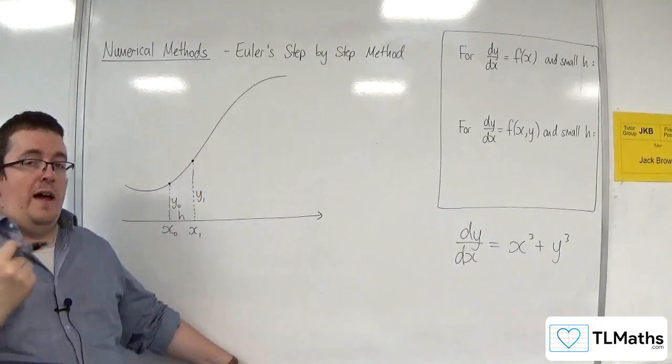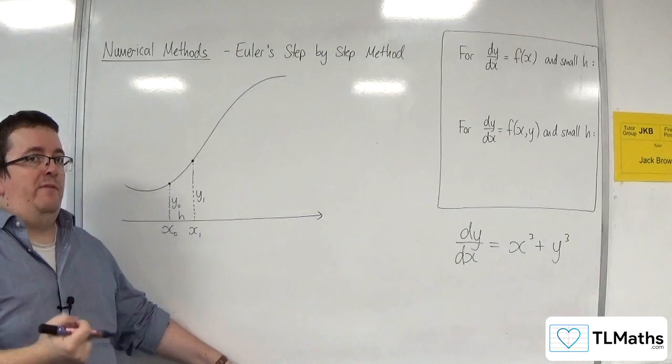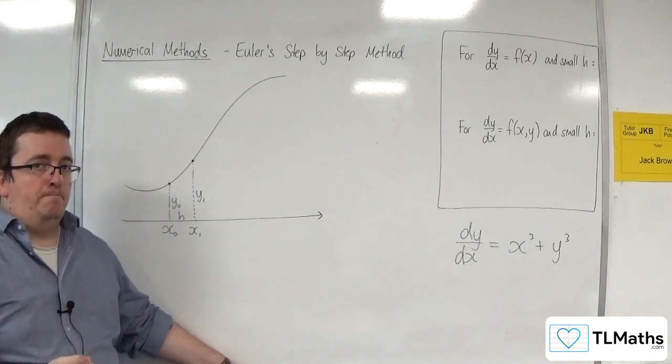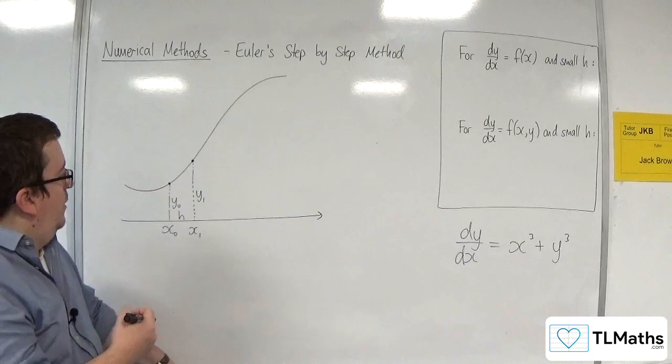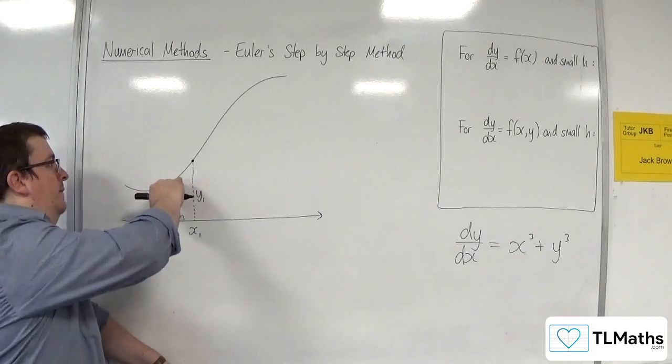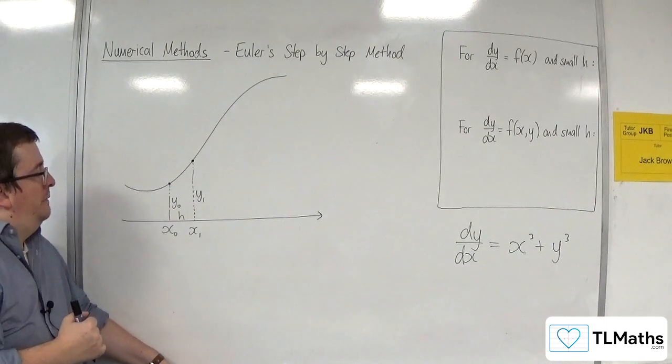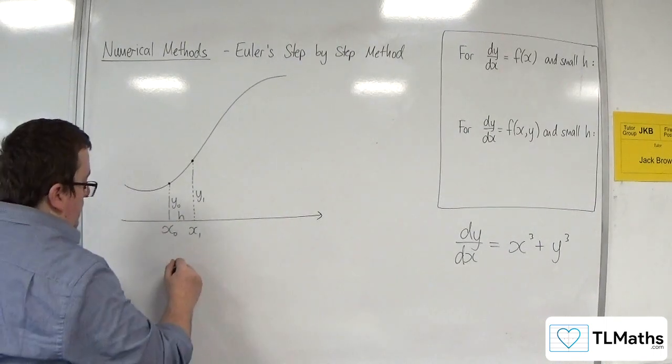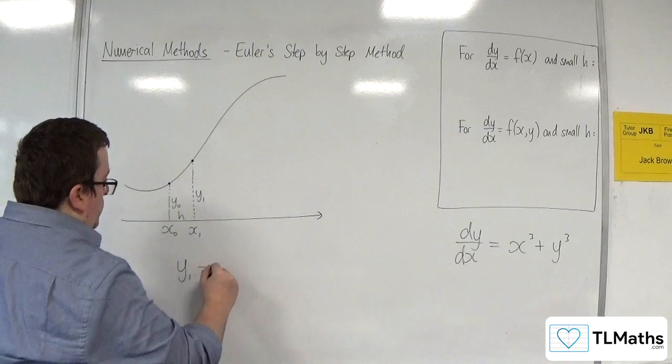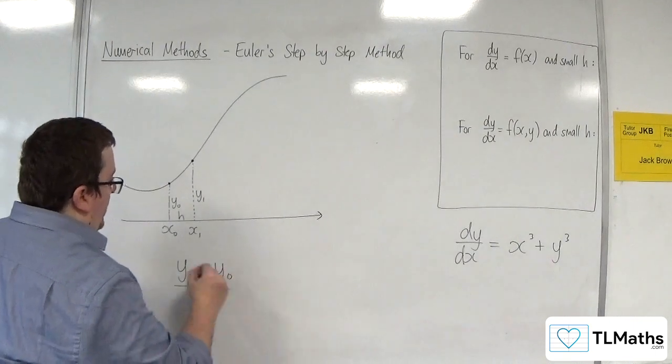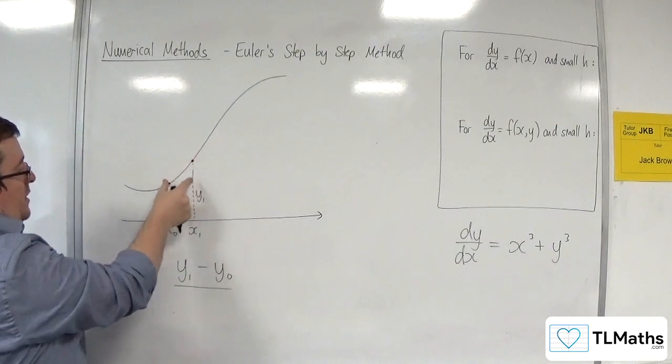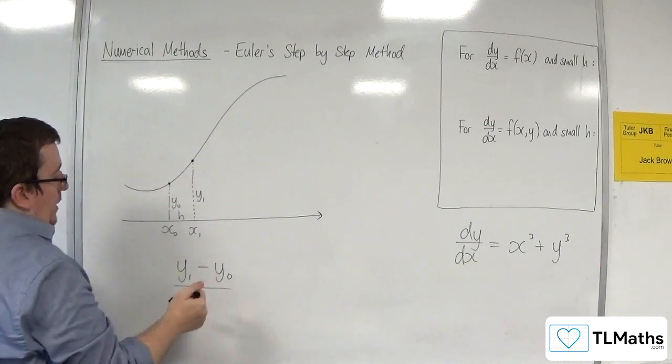Okay, that is what Euler's step-by-step method is going to try to do. Okay, and that's going to allow us to estimate that next point, or approximate that next point on the curve. So the gradient would be the difference in the y-coordinates, y1 take away y0, divided by the difference in the x-coordinates, which is just h.